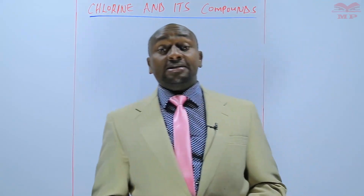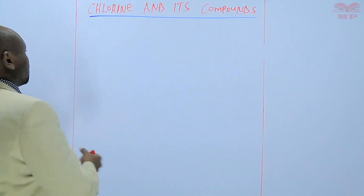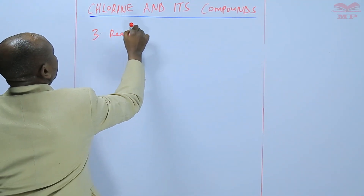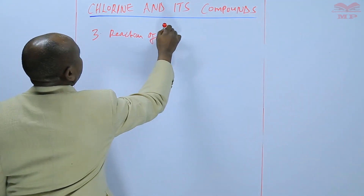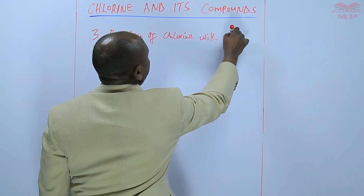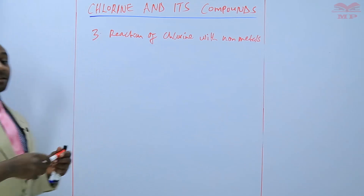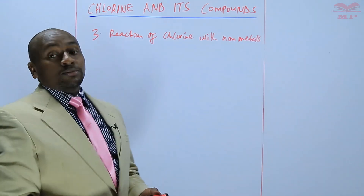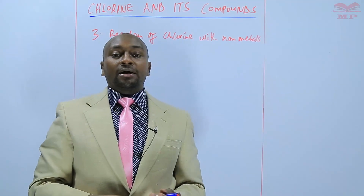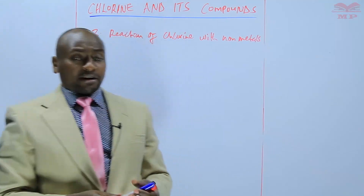Number three is the reaction of chlorine with non-metals. Chlorine reacts with non-metals to form non-metallic chlorides.